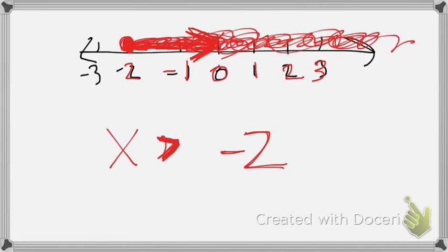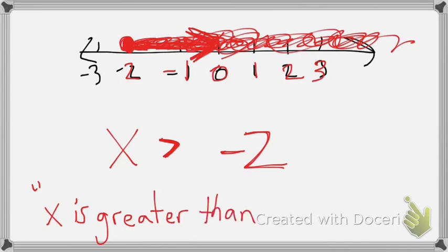So, the way it's written right now, if you read it left to right, x is greater, because it's opening towards the x, than negative 2. That's what this says. Remember, we always read things left to right, just like a book. So, mathless to English. X is greater than negative 2.